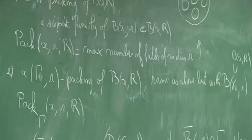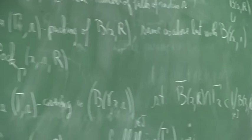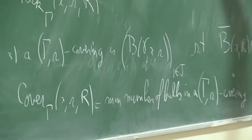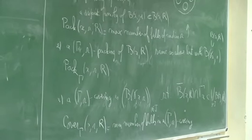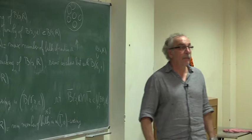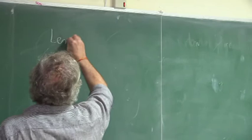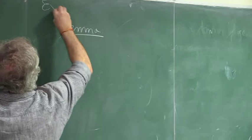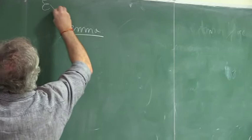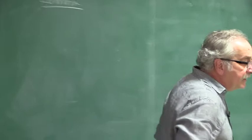There is a lemma, which is trivial. The disjoint balls in a packing are far apart — the centers are at distance at least twice the radius. So these are very elementary observations. Let me write the lemma rather than talking for hours.